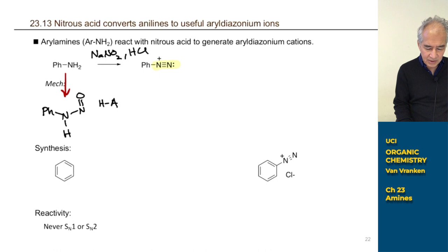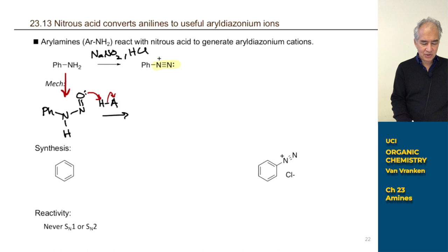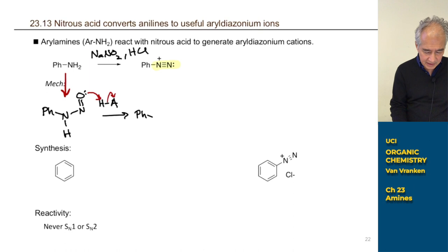Let me go ahead and draw the acid-catalyzed mechanism for that. You've got acid still floating around. What's going to happen is we're going to protonate this. I'm going to use the lone pairs here on oxygen to pick up a proton from our acidic species. Is it HCl? Is it water? These reactions run in water because that's where sodium nitrite is soluble. We're just going to symbolize the acidic species for arrow pushing mechanisms as HA. And that will lead us to this next intermediate.